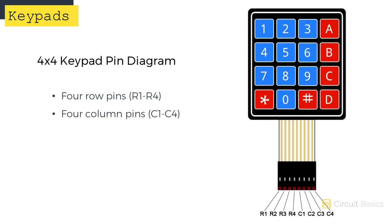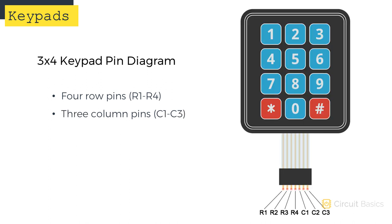Here's the pinout of these really common 4x4 membrane keypads. There are four row pins labeled R1 to R4, and four column pins labeled C1 to C4. On a 3x4 keypad, there are four row pins labeled R1 to R4, and three column pins labeled C1 to C3.